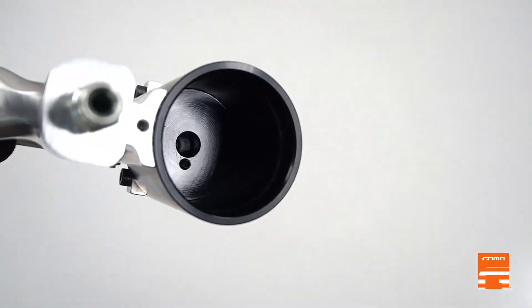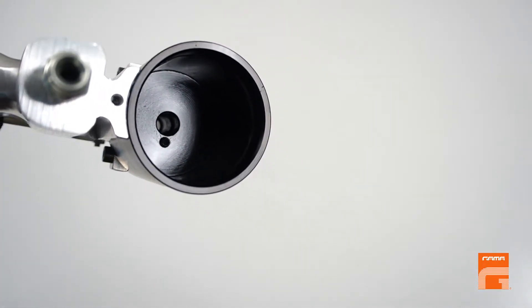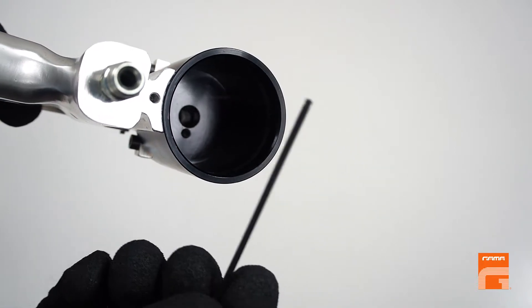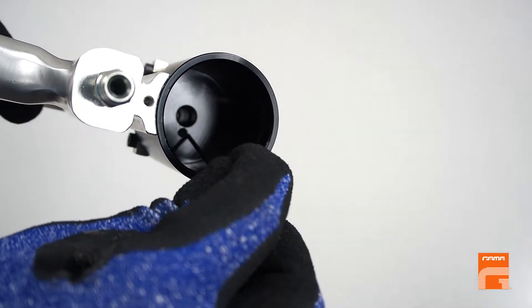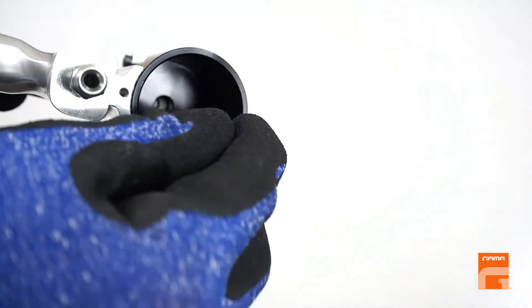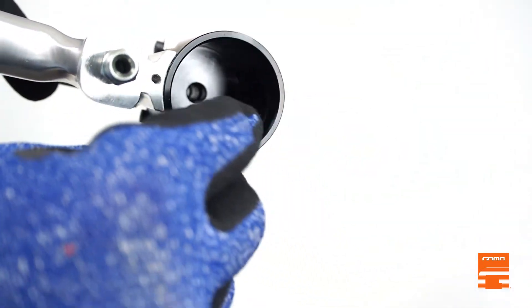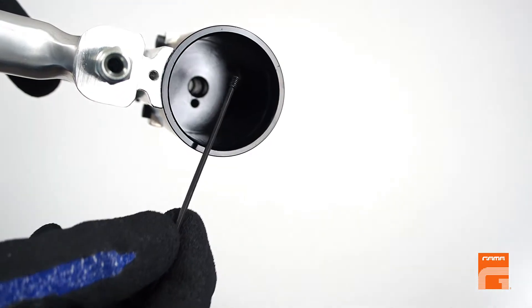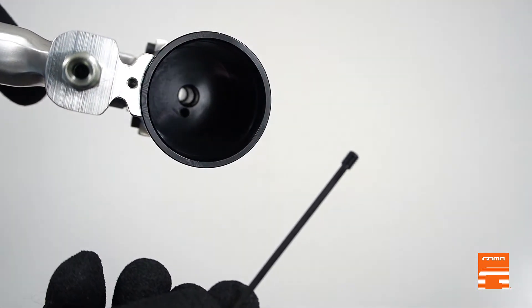Step 7: Using the same allen key as before, we have to extract the plug located inside of the pneumatic cylinder.